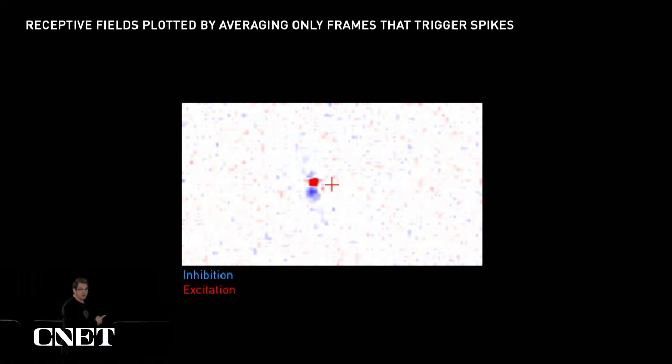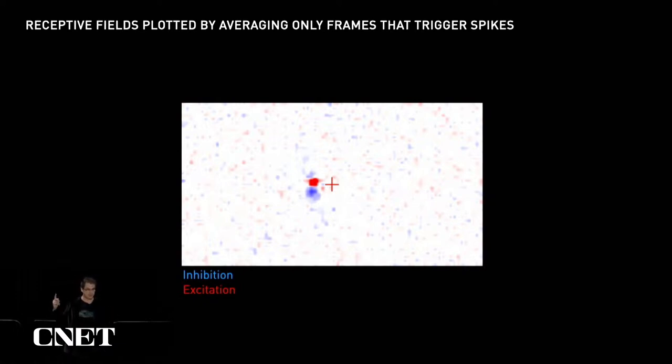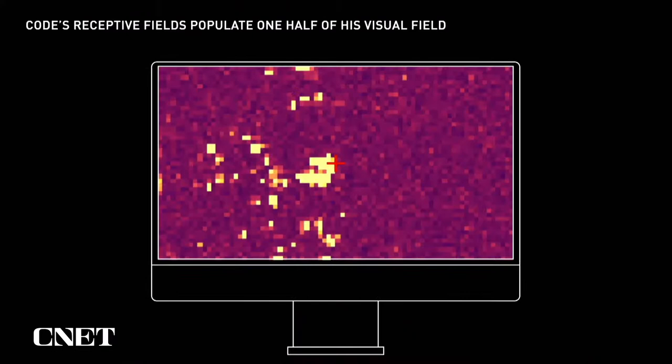We can record all the receptive fields from all the electrodes at the same time. And if we take all these receptive fields and accumulate them together, overlap them, and place them on a computer monitor for scale at a typical viewing distance, you begin to get an idea of how much of the visual field we can cover with this preliminary device.